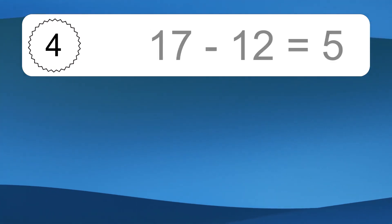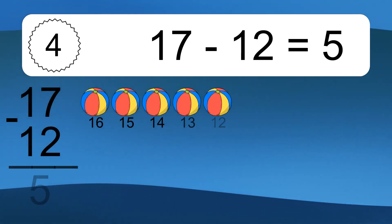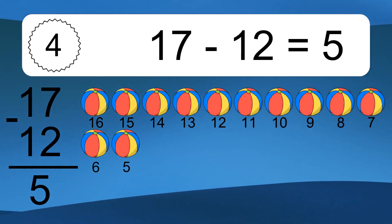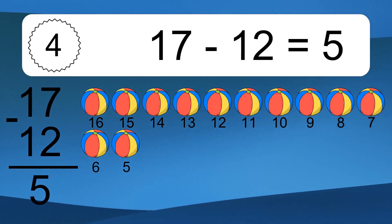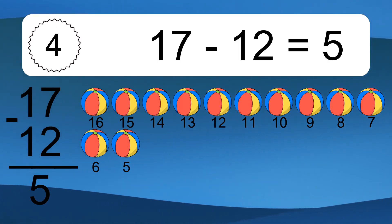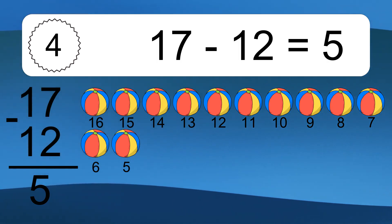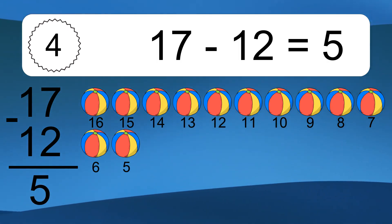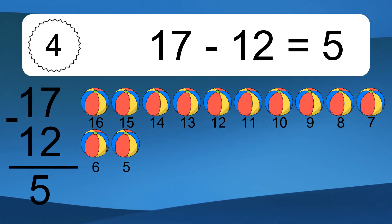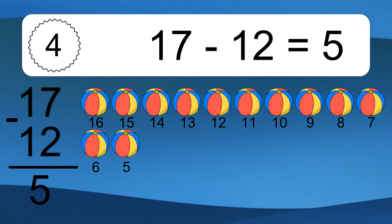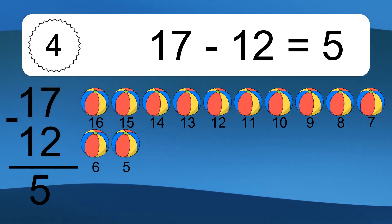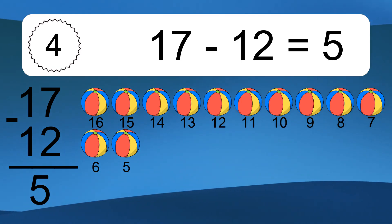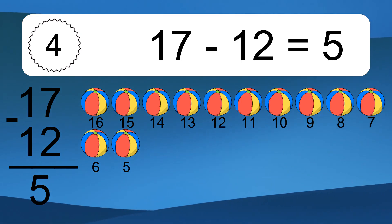17 minus 12 equals what? 17 minus 12 equals 5. Let's count it: 16, 15, 14, 13, 12, 11, 10, 9, 8, 7, 6, 5.